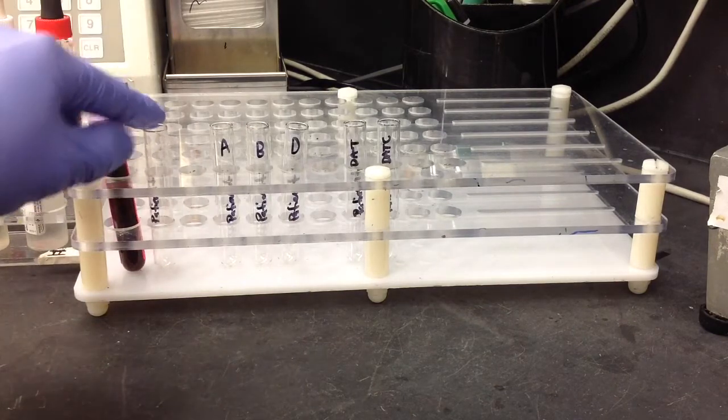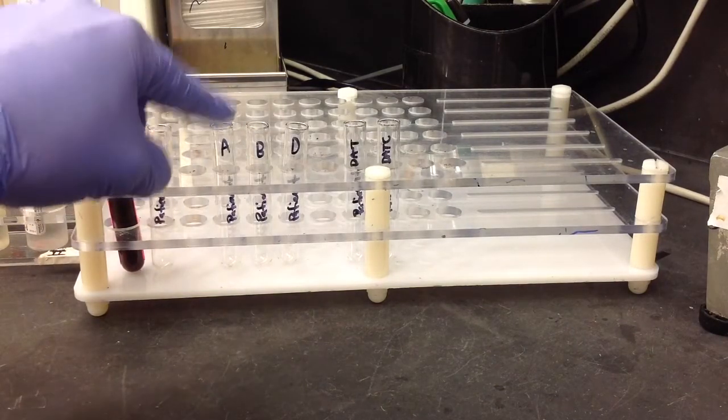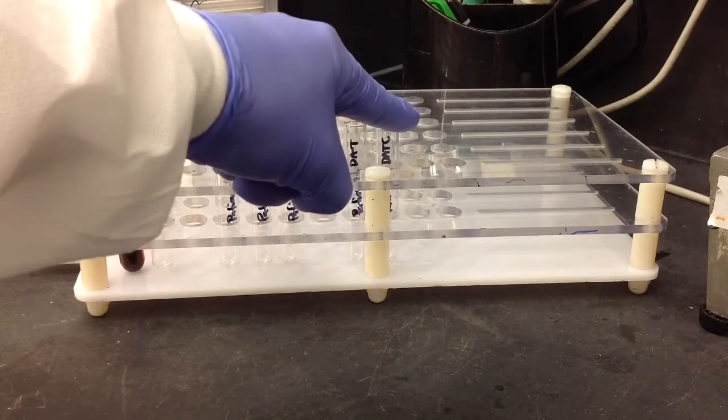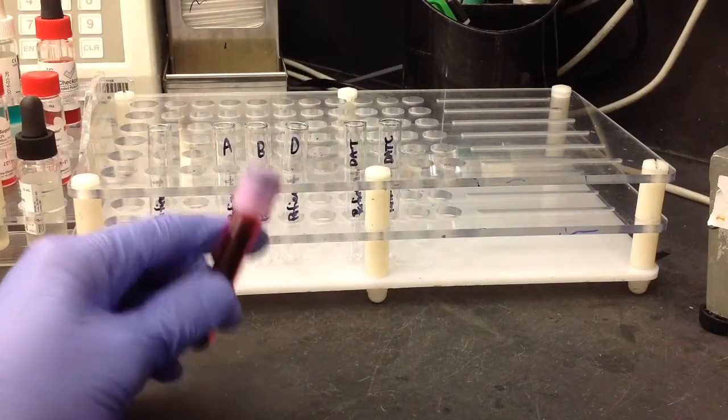And the first thing you're going to go ahead and do is label all your tubes. So I'm going to use that tube for the suspension, and then your AB and D antiserums and your DAT and a DAT control tube.